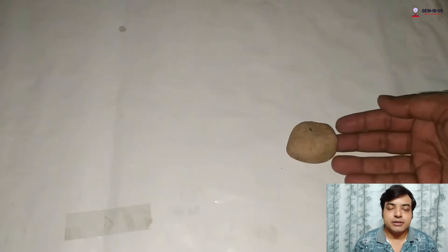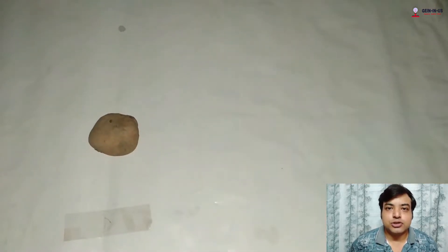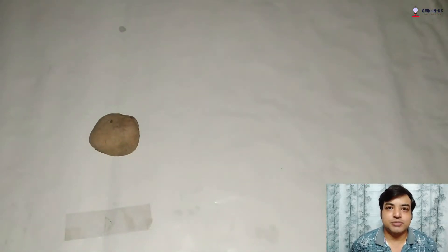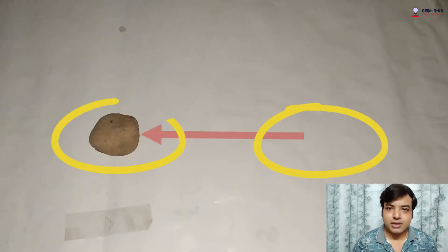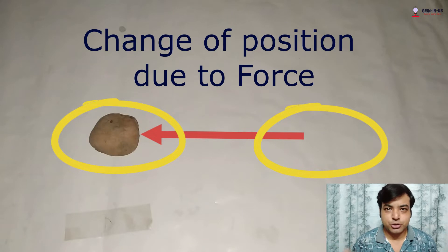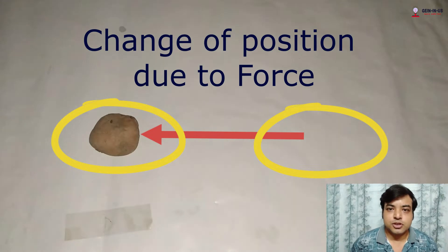Take this object. Now this object is at rest. If I apply force to this object, you can see this object moves from one position to another. That means the object changes its position due to force. So changing of position is one effect of force.